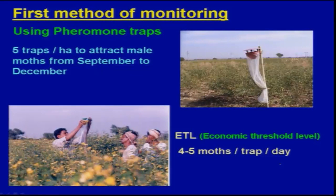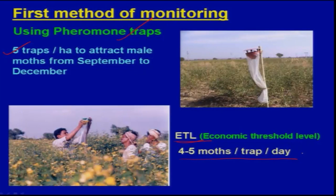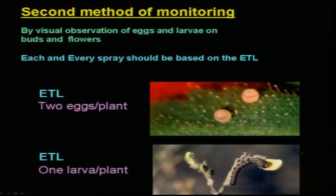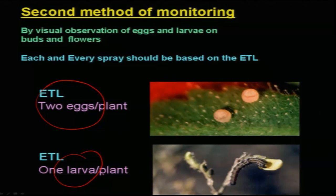That is why monitoring is an important tool in IPM. In the first method, we can use pheromone traps — set up about five traps per hectare to attract male moths. The average economic threshold level (ETL) is four to five moths per trap per day to initiate insecticide application. In the second method, using egg or larval population: the ETL is two eggs per plant or one larva per plant. Count randomly on 10 to 15 plants and average the figure; if it crosses the ETL, go for control measures.